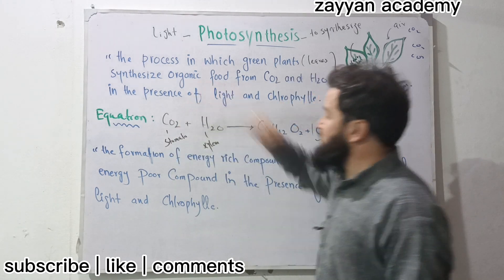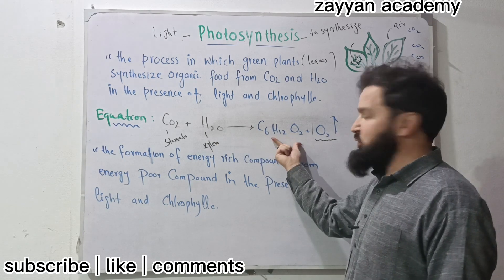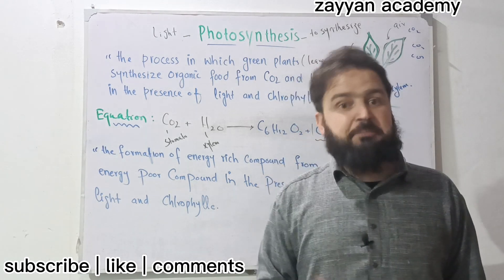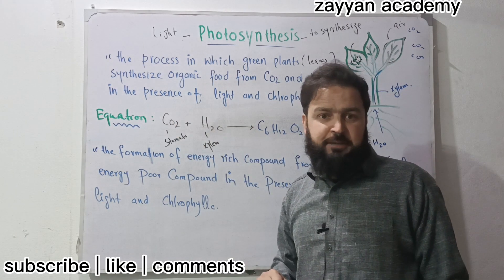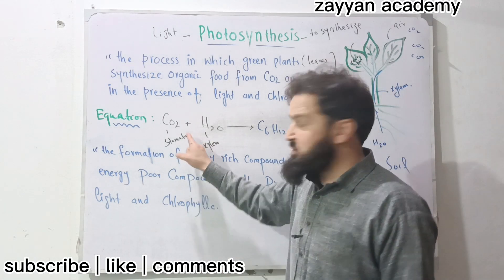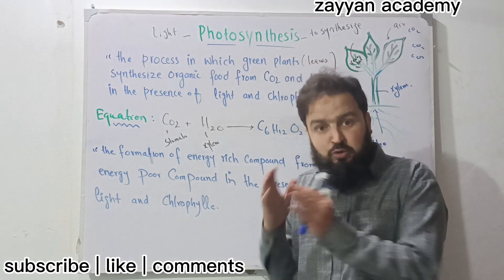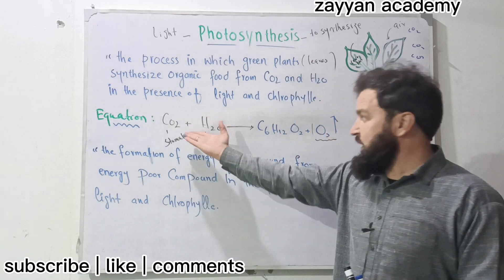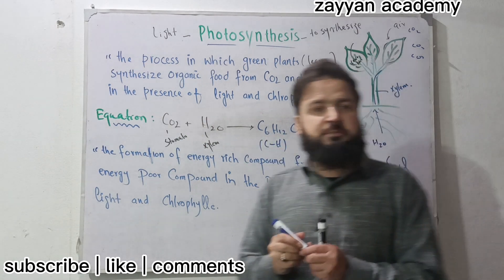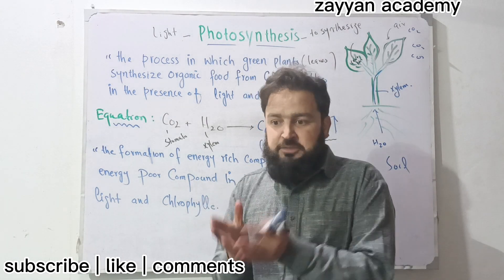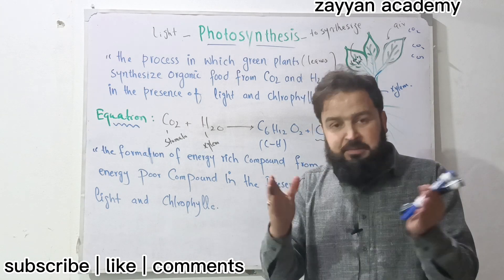We're talking about the organic food molecule definition. Organic food molecule definition: it involves a C–C bond, forming an energy-rich compound from an energy-poor compound. There is no C–C bond in the reactants of photosynthesis. The C–C bond is a small molecule or compound, meaning an energy-rich compound. If the C–C bond breaks, it releases energy.